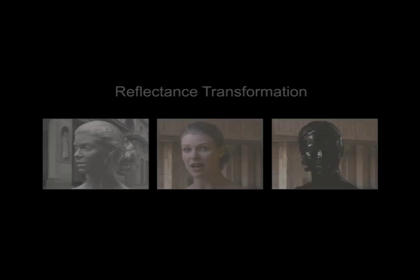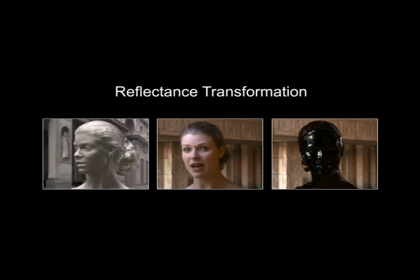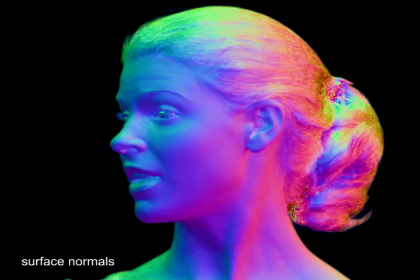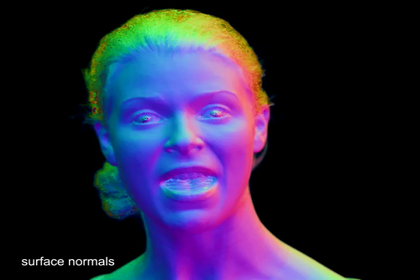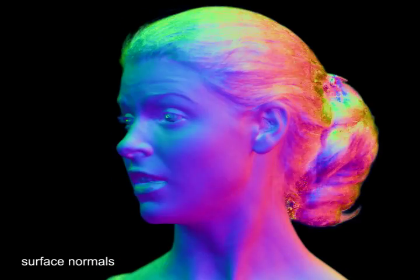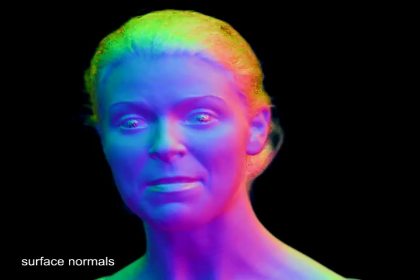We can process the reflectance functions of the performance to produce either subtle or stylized changes to the actor's reflectance. From the lighting directions, we can estimate surface normals using photometric stereo, seen here as colored normal maps. The process also estimates the diffuse albedo of the performance, and an ambient occlusion map can be derived by analyzing the shadowing in the reflectance functions.